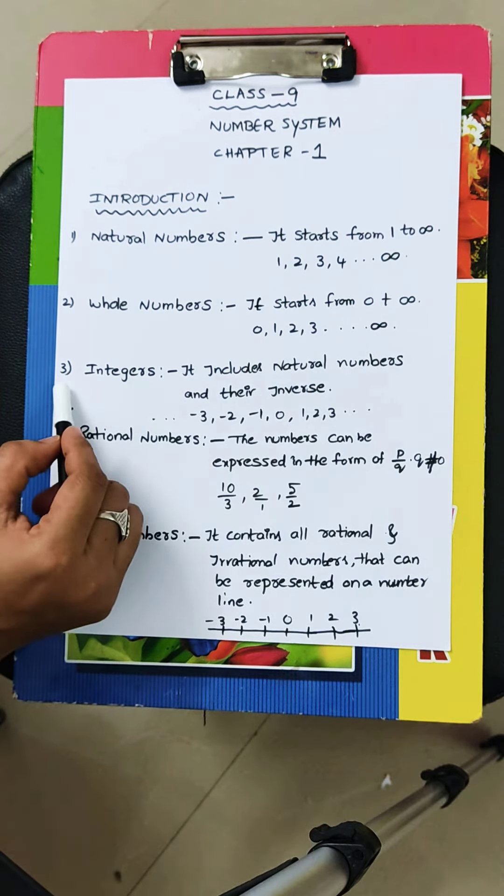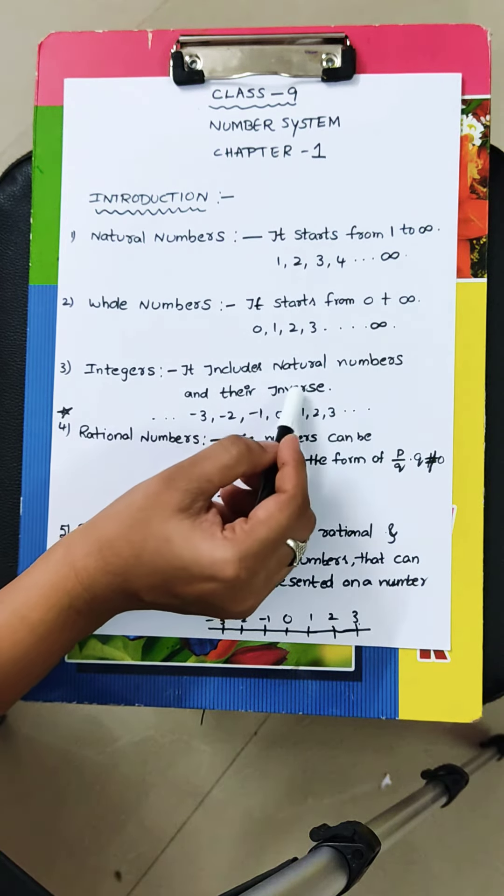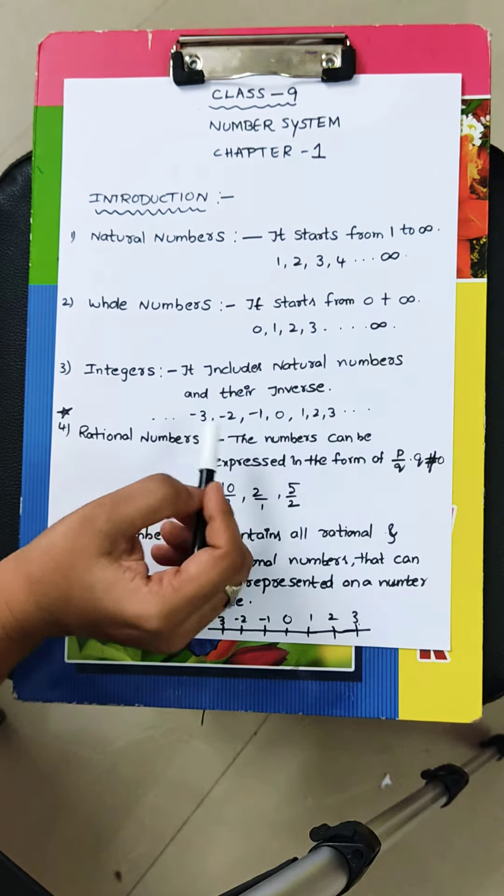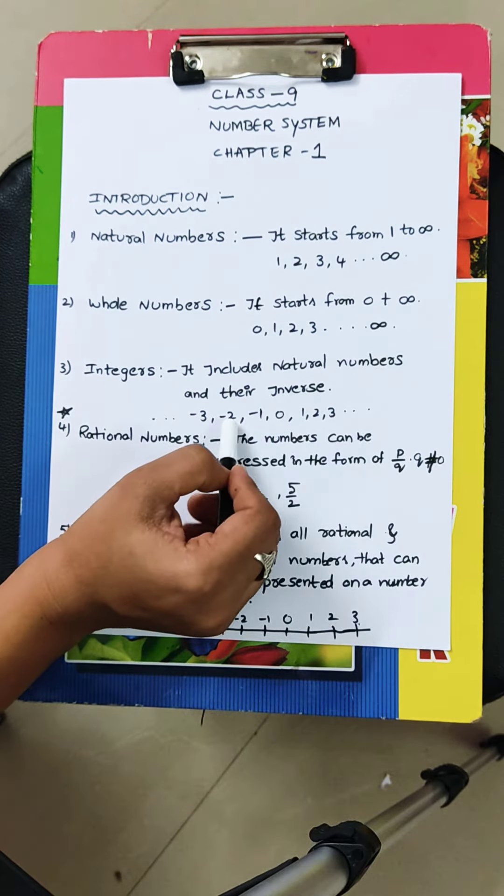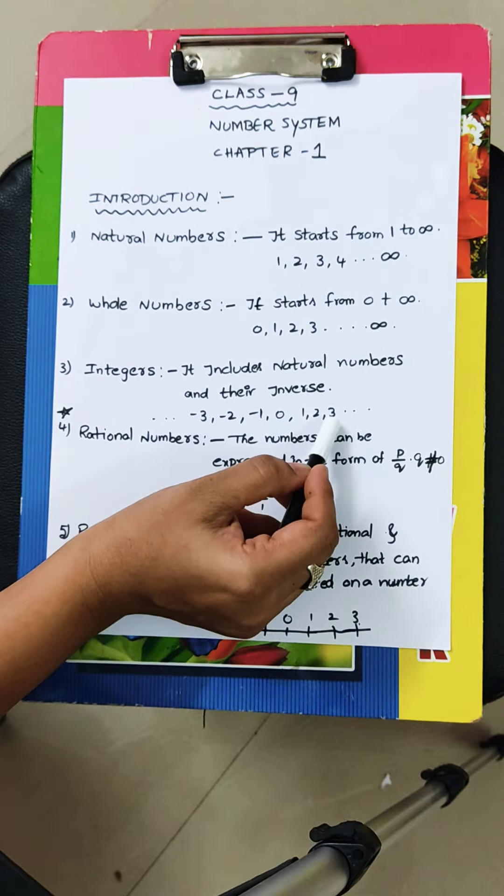Next, third one, integers. Integers means it includes natural numbers and their inverse. Their inverse in the sense reverse, I mean minus numbers. Minus 3, minus 2, minus 1, 0, 1, 2, 3 and so on.